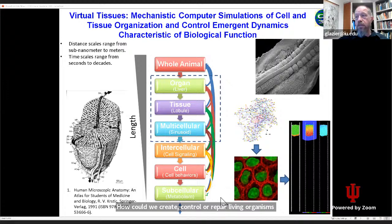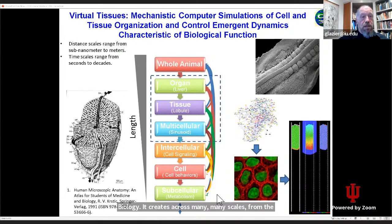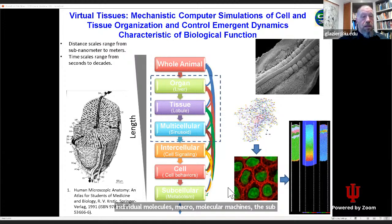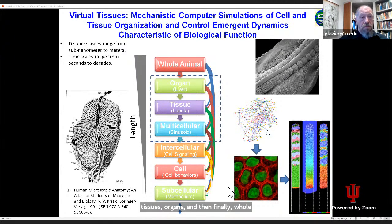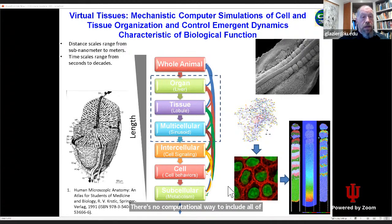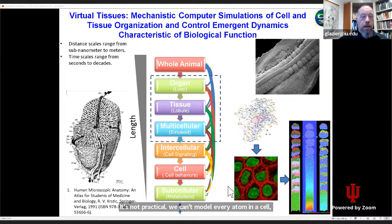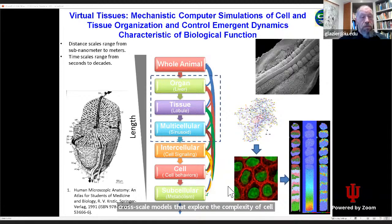Biology occurs across many scales, from the individual molecules, the macromolecular machines, the subcellular organelles, the cellular organization signaling locally between cells, large-scale multicellular structures that build tissues, organs, and then finally whole organisms. There is no computational way to include all of those scales in a single model — it's not practical. We can't model every atom in a cell or every cell in an organism, but we can build cross-scale models that explore the complexity of self-organization and repair and failure.